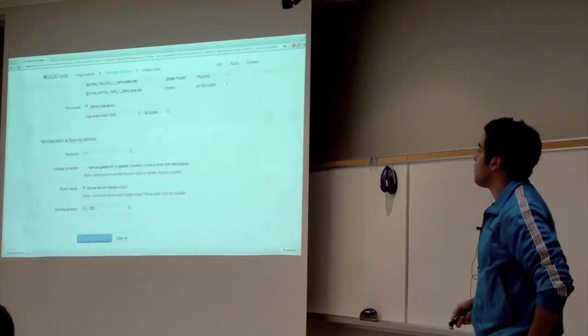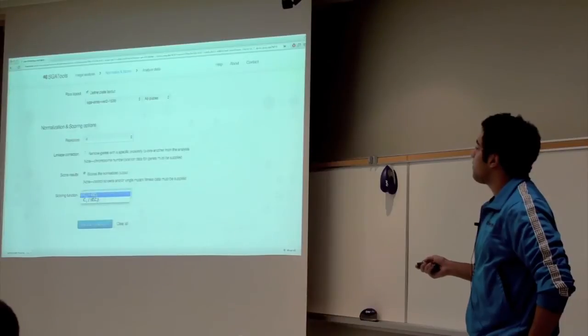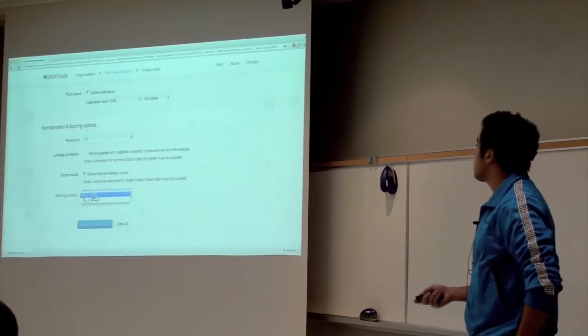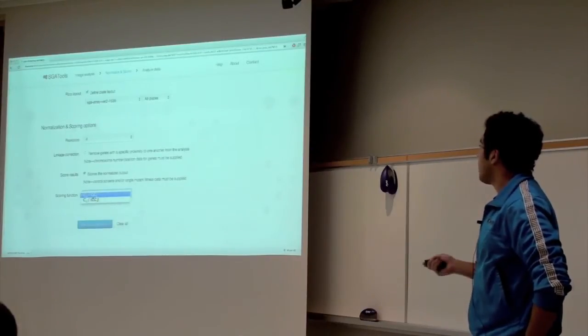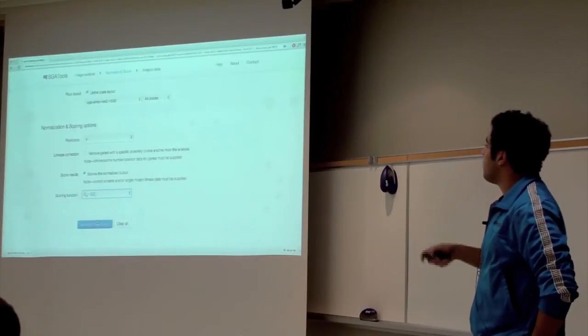So we're just going to go ahead and select all plates. You can select the number of replicates that you have. Typically, the plates are made in quadruples. So like every four is the same replicate. You can select that or you can select one. There's this linkage correction effect, which I can talk about more in detail later on. And you can choose whether you want to score your results or not.